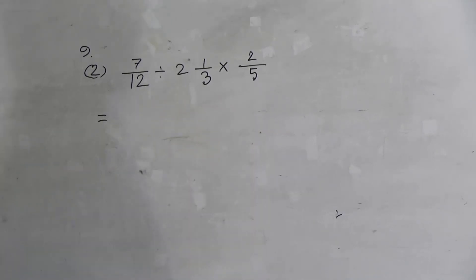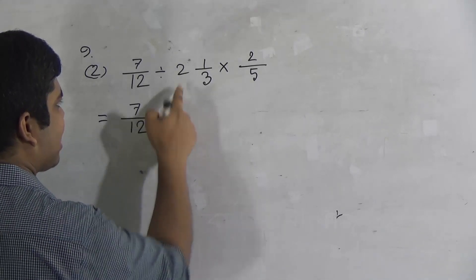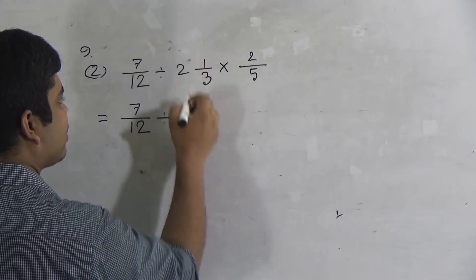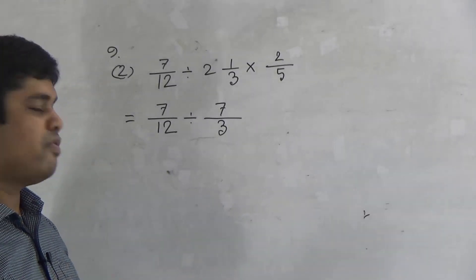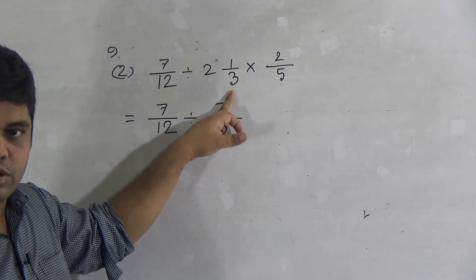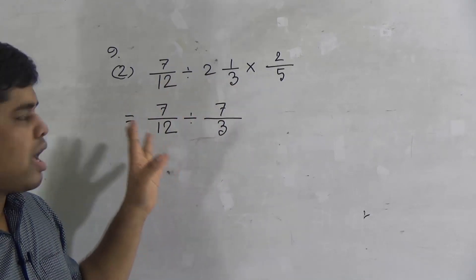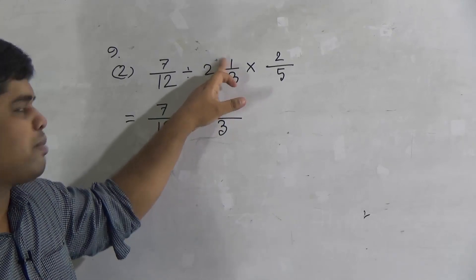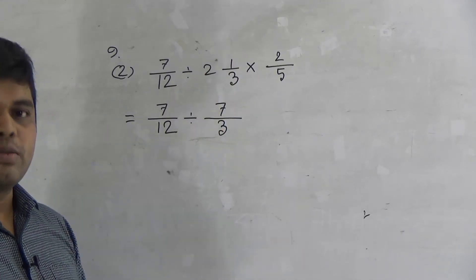When we solve such type of math, at first we notice if any number is a mixed fraction or not. If mixed fraction, then we convert that mixed fraction into improper fraction. First of all we convert this mixed fraction into improper fraction. Here, division sign: 2, 3's are 6, 6 plus 1, 7. That means 7 by 3. How can we convert mixed fraction into improper fraction? We multiply the integer part with the denominator: 2 times 3 equals 6, then add the numerator 1, giving 7. So 7 by 3 is the improper fraction of this mixed fraction.